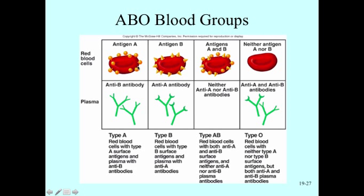Looking at this chart, we see that a person who is blood type A has A antigen on the surface of their red blood cells — glycoproteins that we assign the title of A. A person with blood type B has B antigen on the surface of their red blood cells. A person with AB blood type has both A and B antigens on their red blood cells. And a person that is type O blood has no antigens on their red blood cells.